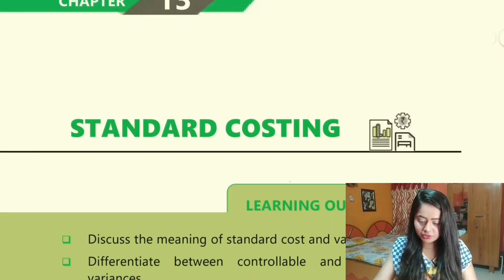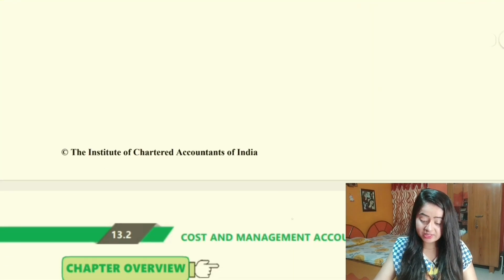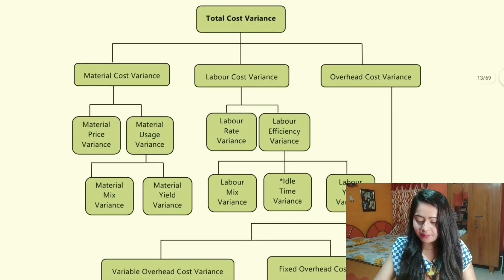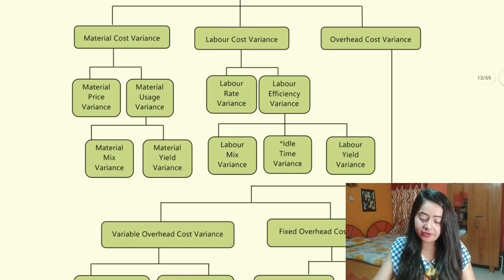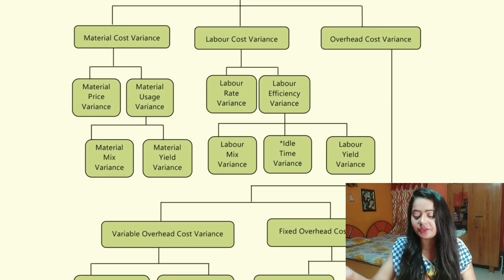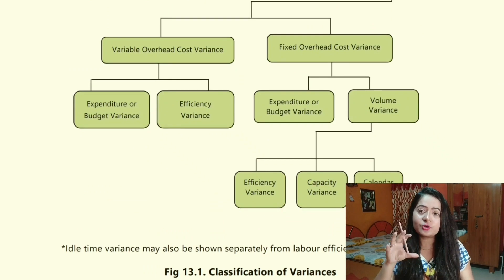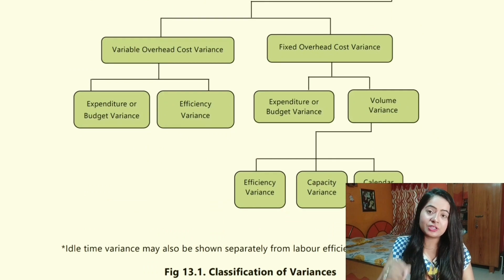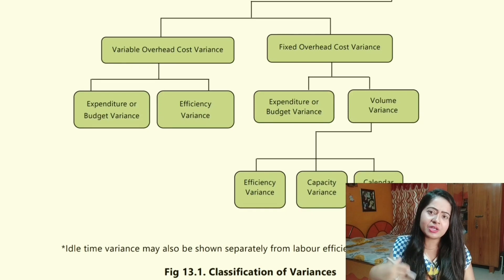For example, in standard costing there are many different formulas — you have the total cost variance, which is divided into material cost variance, labor cost variance, and overhead cost variance. When making notes for standard costing, please make sure that you write all of these formulas in one place so that later on it is easy to revise.